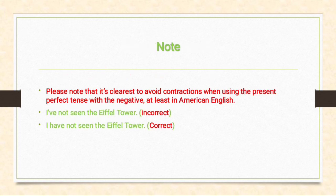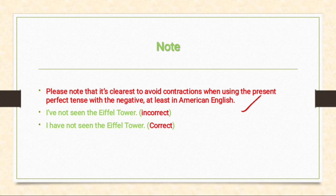Note: it is clearest to avoid contractions when using the present perfect tense with the negative, at least in American English — when speaking with Americans, try to avoid contractions. For example, 'I haven't seen the Eiffel Tower' is incorrect in this context; 'I have not seen the Eiffel Tower' is correct.